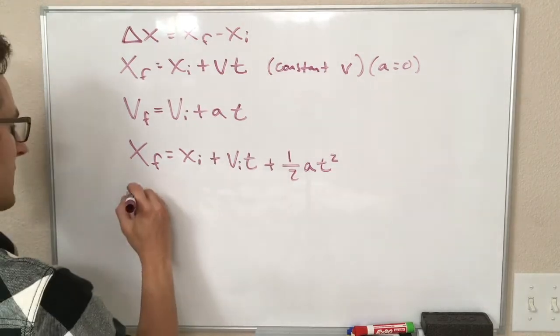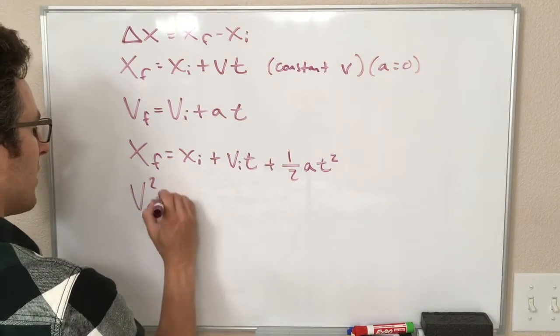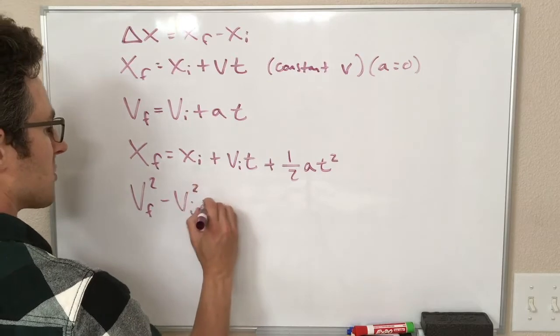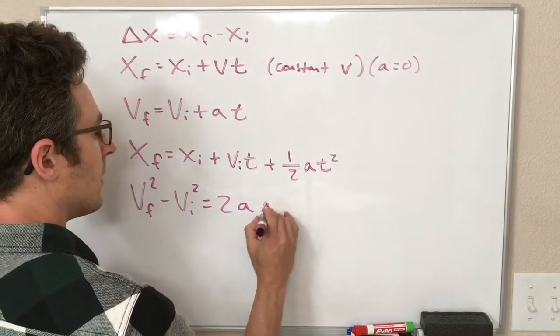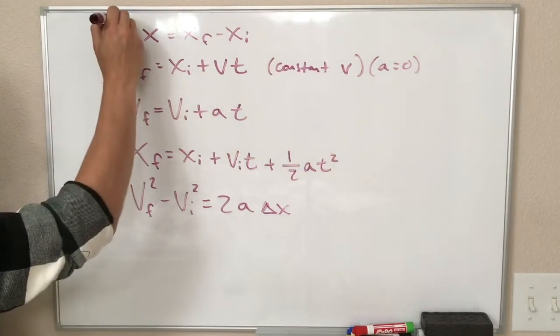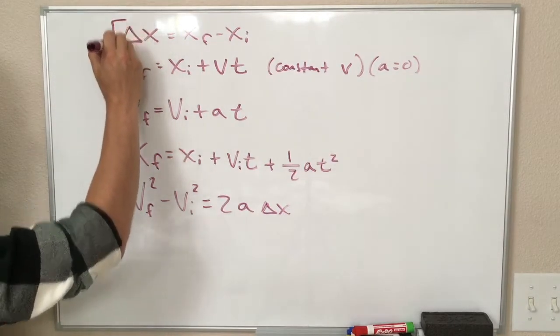And lastly, we have our what we call the time-independent equation, v-final squared minus v-initial squared is equal to 2a delta x. So these are our kinematic equations.